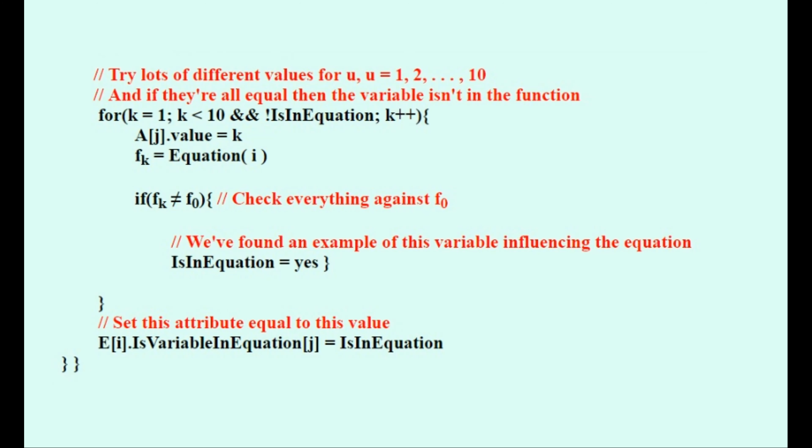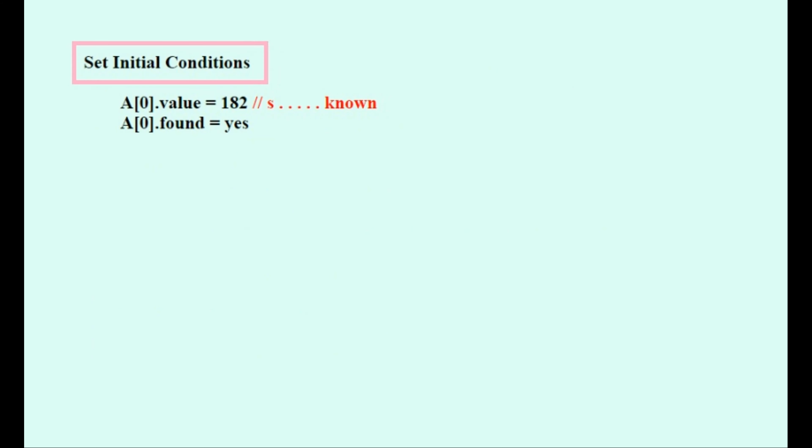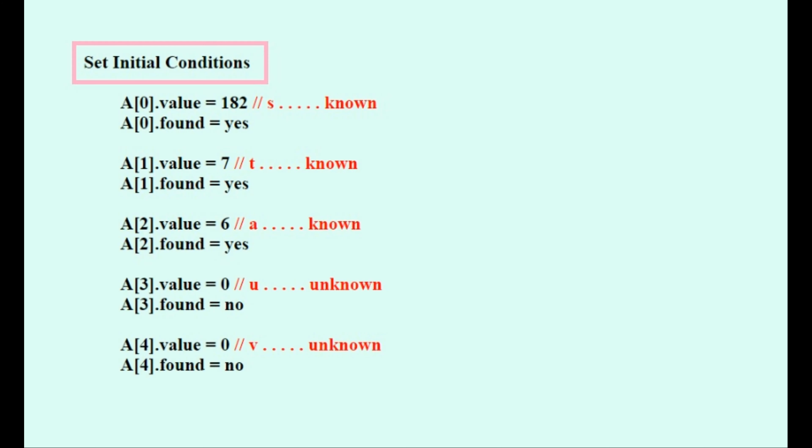And then in this final line, we'll set the attribute equal to yes or no, depending on whether or not the variable was found to be in the equation. And now to set all the initial conditions. The value of S is known, so we'll set found to yes and set its value. The next two values are also known, like the first one. But these two values are unknown and we're trying to find them, so we'll set their found attribute to no and set their value to be equal to zero for neatness and to avoid errors in the program. They don't really need to be set to anything yet.